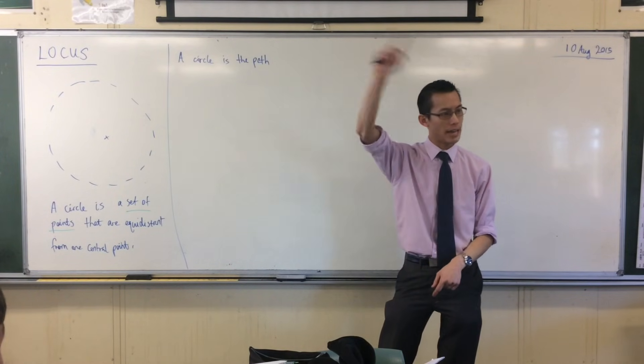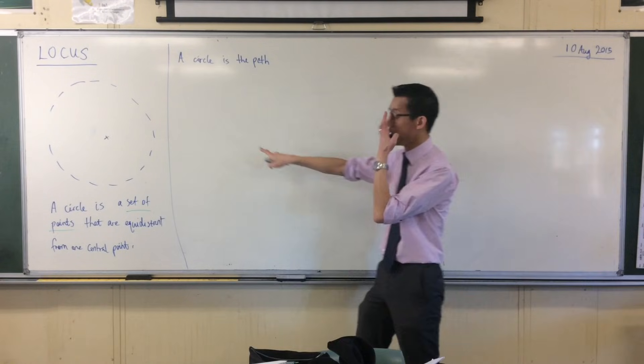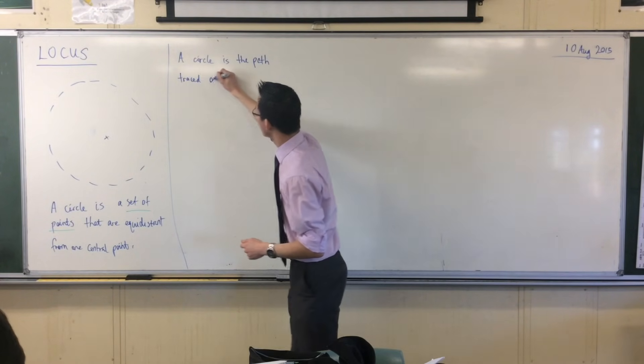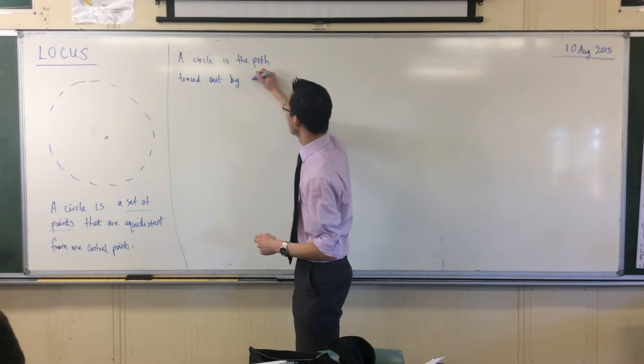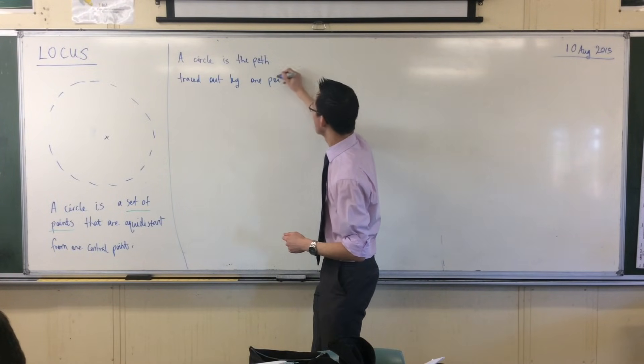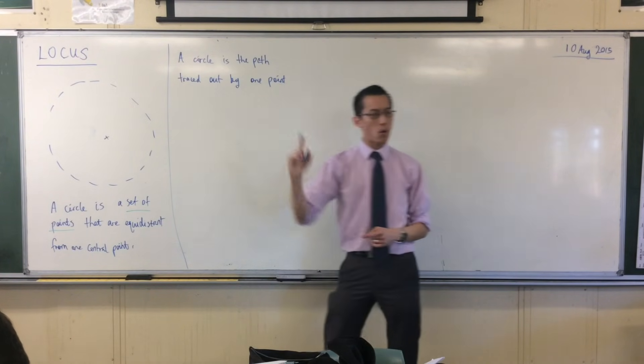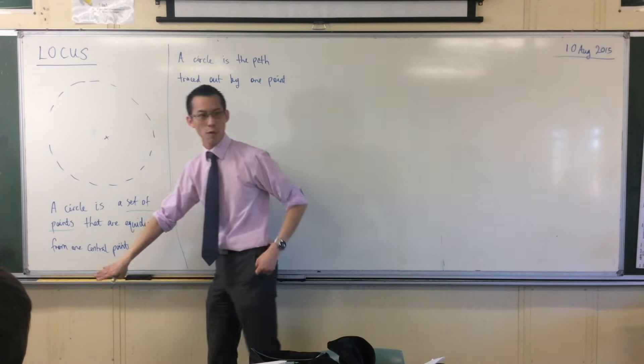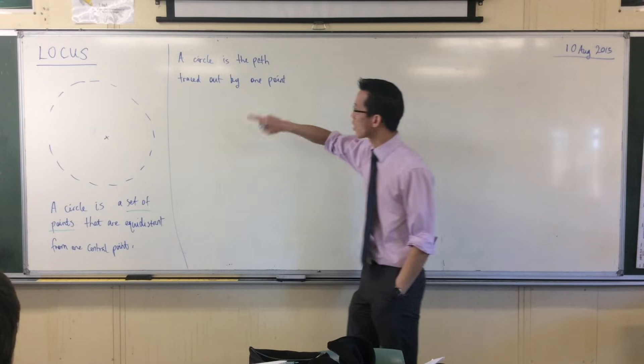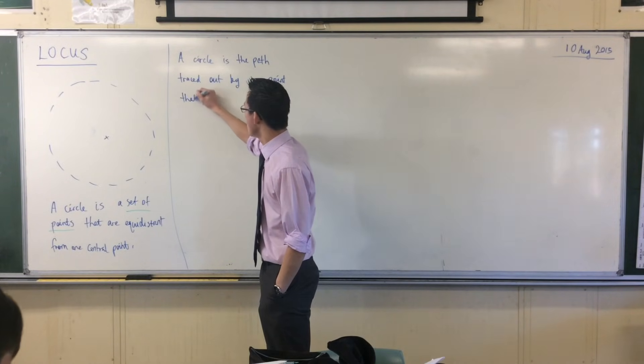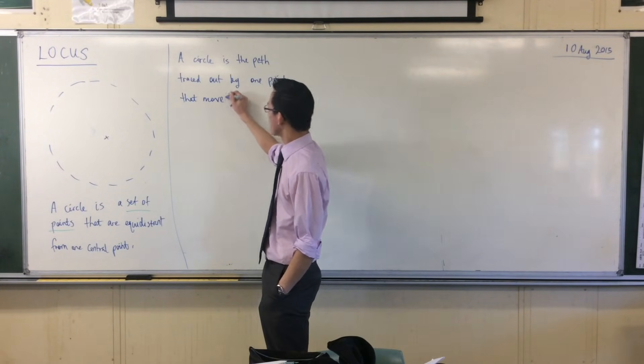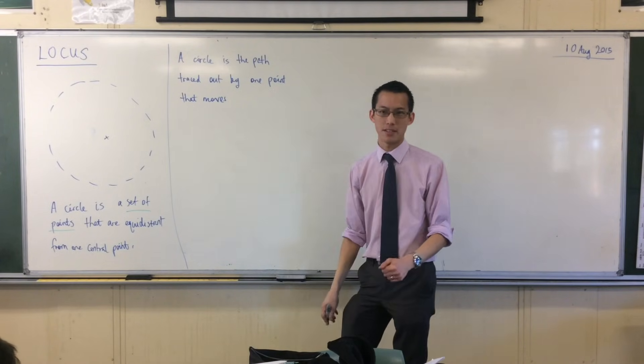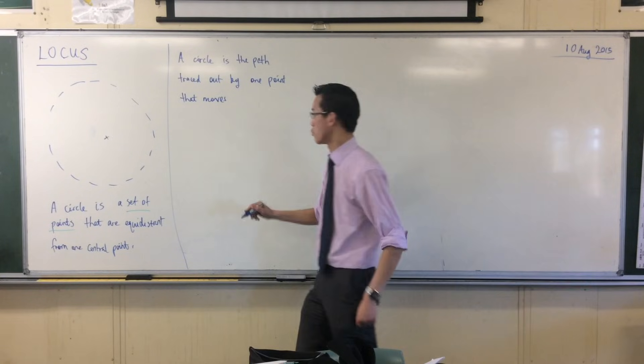Okay, I'll say that again and we'll write it down. A circle is the path traced out by one point that moves according to the same idea down here that we said before: they would be equidistant from one certain place. A circle is the path traced out by one point that moves such that it's always the same distance—it's always equidistant from a central point.